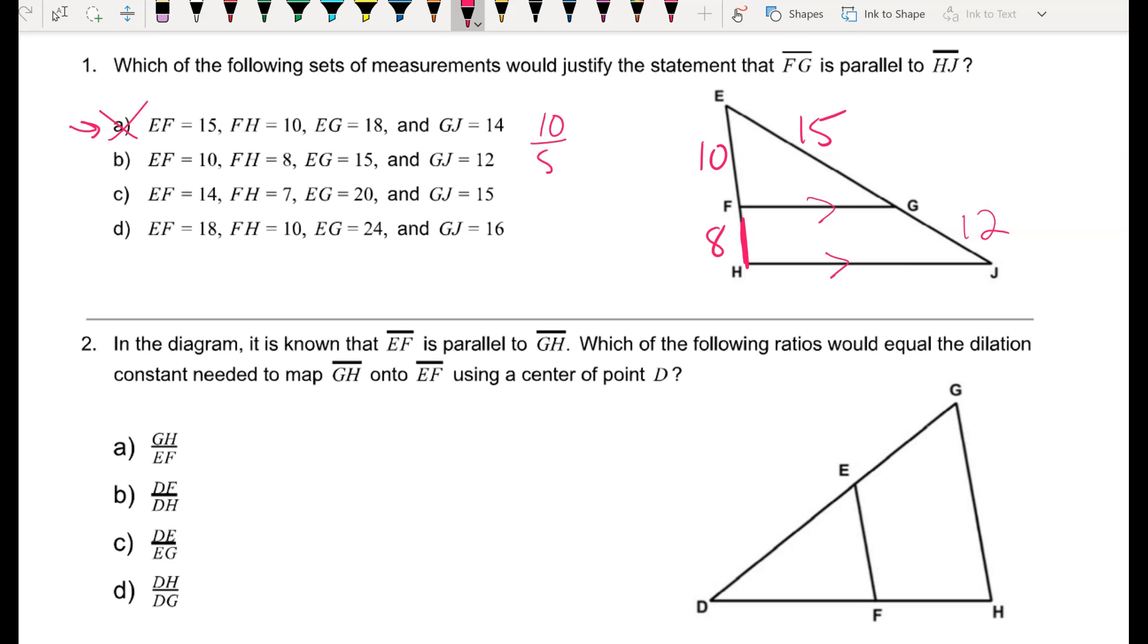If I put 10 over 8 and set that equal to 15 over 12, let's see what happens. Well, 10 times 12 when I cross-multiply is 120, and 8 times 15 is also 120. So those would be the side lengths that make those pieces proportional, which would mean that FG would have to be parallel to HJ.